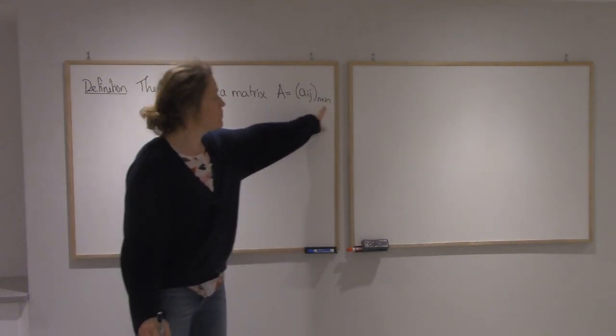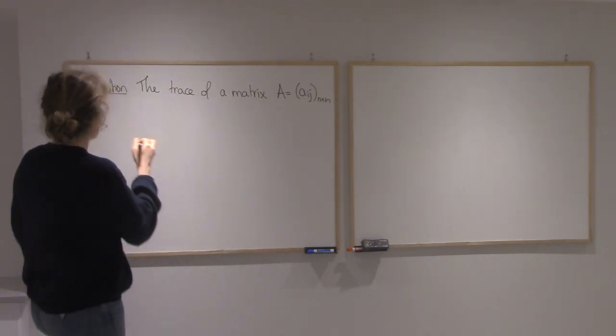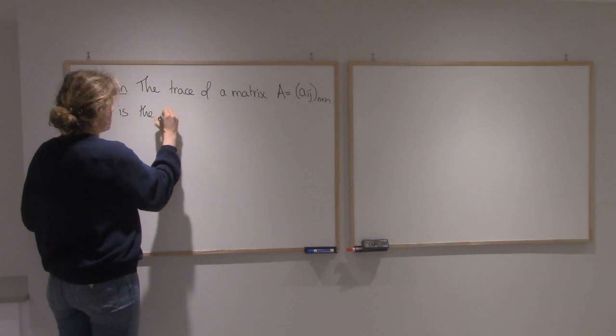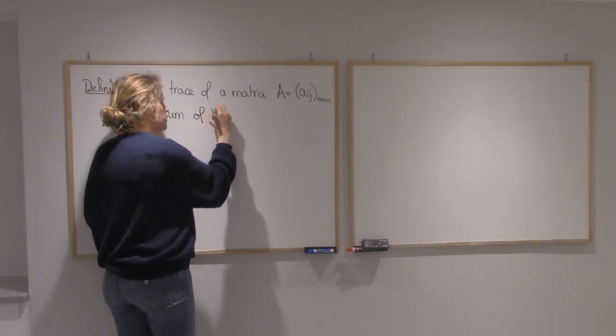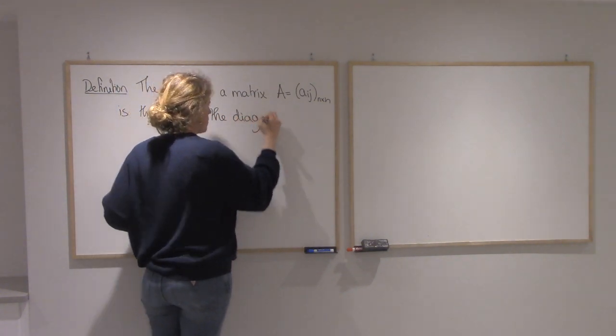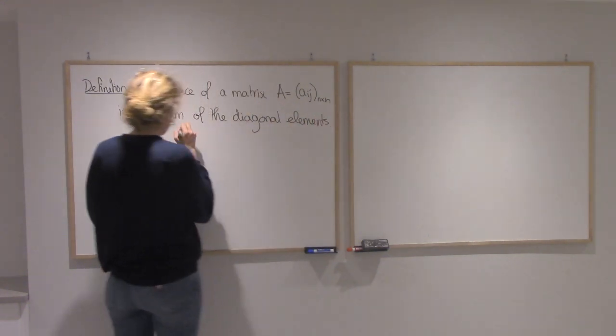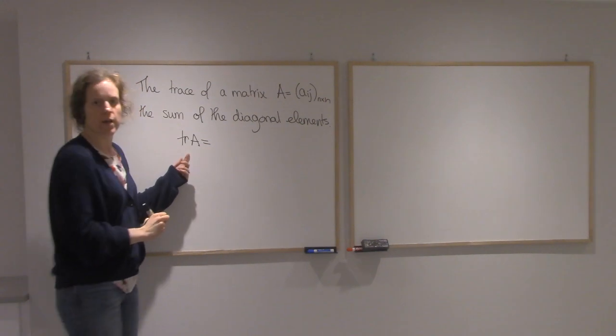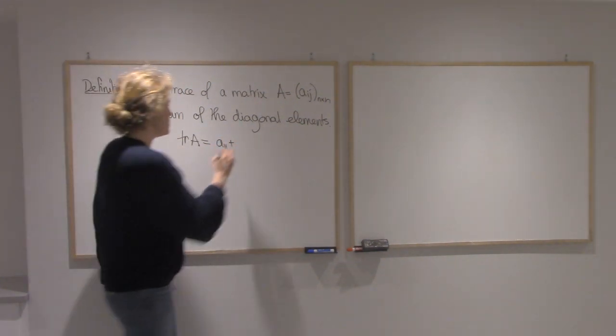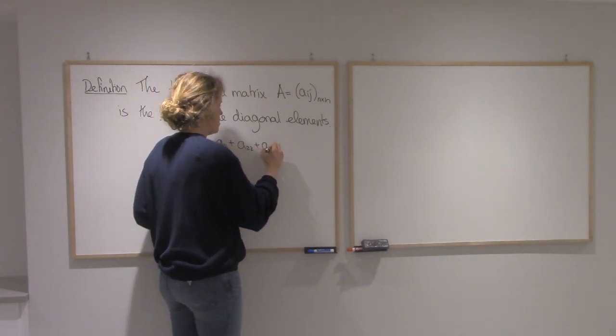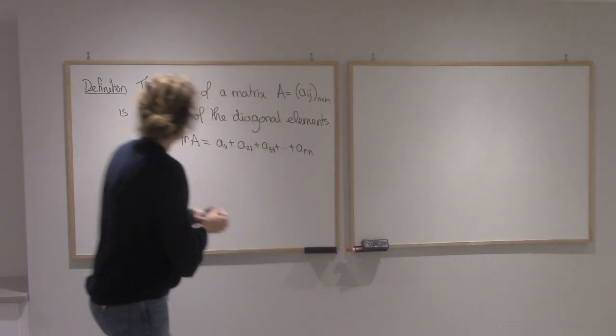If I have an n by n matrix with entry aij, the trace of the matrix is the sum of the diagonal elements. The trace of A would be the top left element, and then I go down along the diagonal, which gives me the trace.